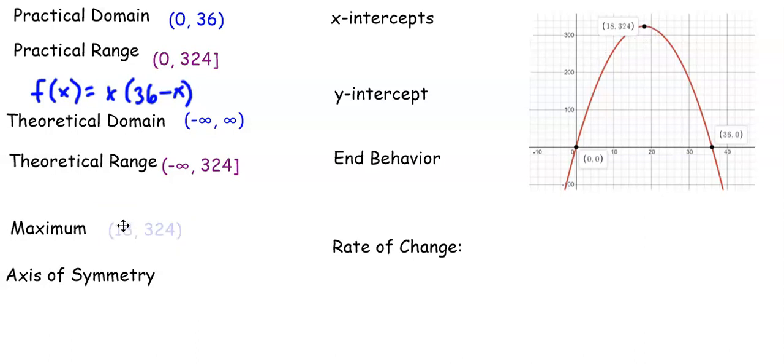The maximum point was 18, 324, which tells us that when the length of the fence was 18, you would have the maximum area of 324 square feet.